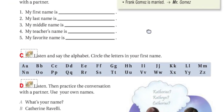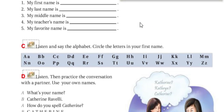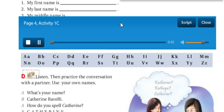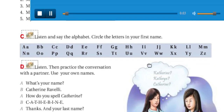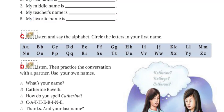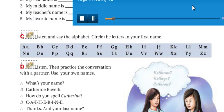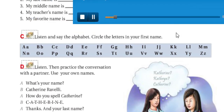Now let's listen to the alphabet. Page 4, Lesson B, Saying Names in English. Listen and say the alphabet. Circle the letters in your first name.